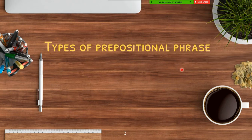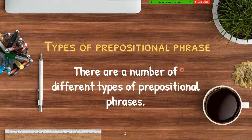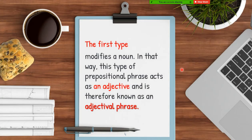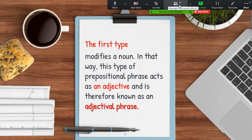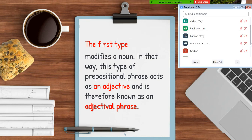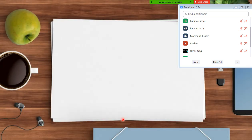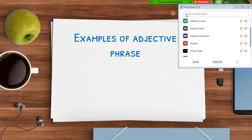What types of prepositional phrase do we have? In class we said we have two types, but today we are going to add another type — so we have three types. The first type: when it modifies a noun, it acts like an adjective, so we call it an adjective phrase. This is the first type — an adjective phrase: it describes or modifies a noun in a sentence.